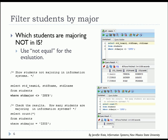Now let's filter students by major. Which students are not majoring in information systems? We're going to run a statement here that says SELECT student ID, first name, last name FROM students WHERE student major does not equal ISIS.